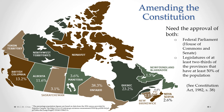To unpack that second requirement: we need the approval of at least two-thirds of the provinces — there are 10 provinces, so we need at least seven provinces. And the total population of those approving provinces has to be at least 50 percent of the total population of Canada. Based on this amending formula, no single government, whether federal or provincial, can on its own amend the constitution. There has to be a high level of consensus within the country.